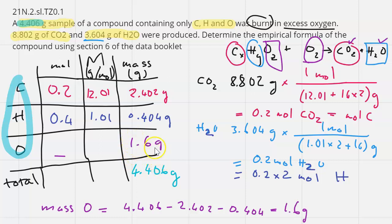I'm going to organize it in this table. We can check: 2.404 plus 0.404 plus 1.6 we would get 4.4 gram. Now we can go backward this way.